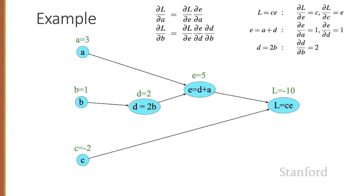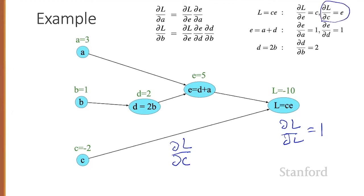In the backward pass, we compute each of these partials along each edge of the graph from right to left, multiplying the necessary partials to get the final derivative we need. We begin by annotating the final node with the partial of L with respect to L, which is one, then move to the left. We can compute the partial of L with respect to C, which is E. The forward pass will have computed the values of intermediate variables like D and E, so we know E is five, meaning the partial of L with respect to C is five.